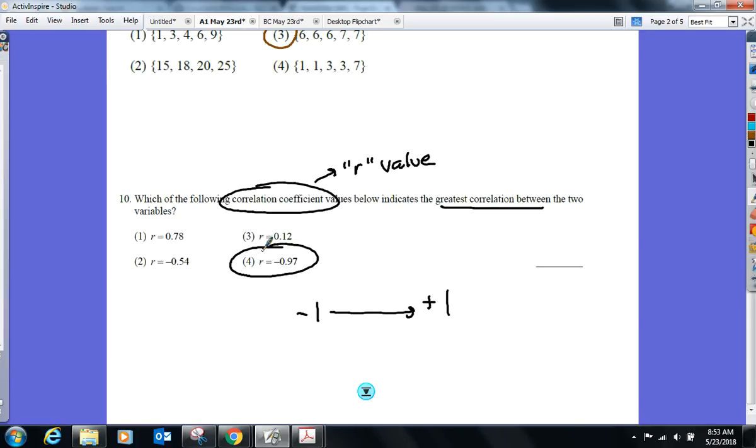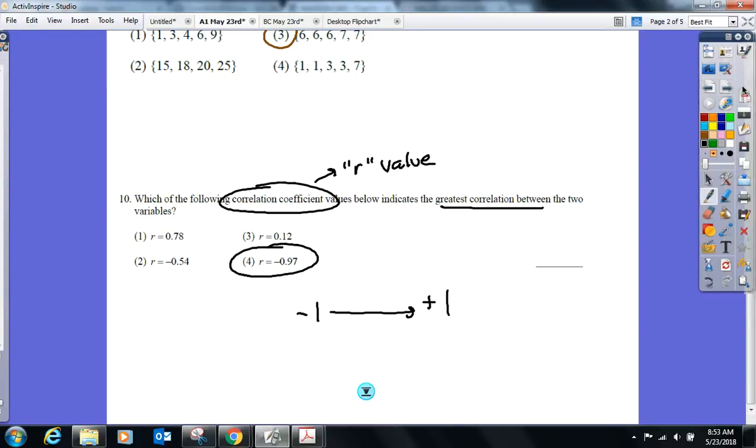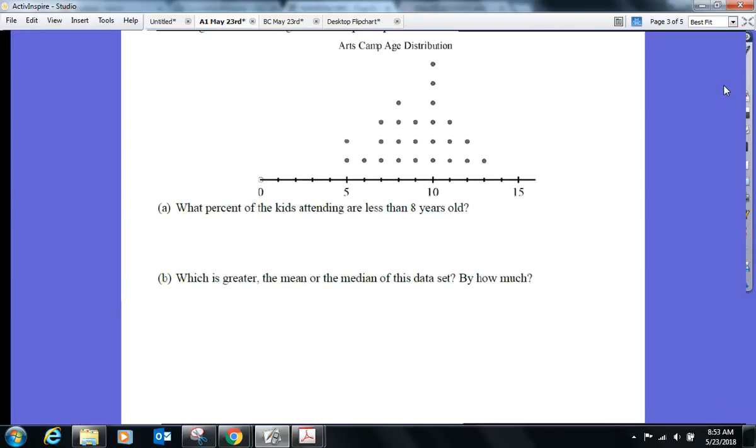That's no correlation. They have no, like, here you go. IQ and shoe size would be a zero correlation. They have nothing to do with each other. Okay. So that would be something close to zero, I assume. Okay. No correlation at all. Good? All right. A few more. Yep. Let's go to that dot plot.